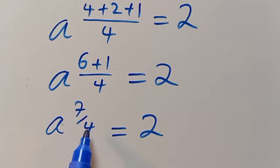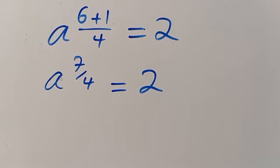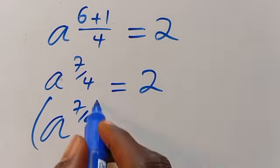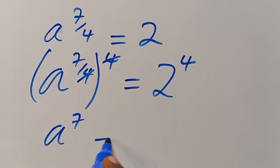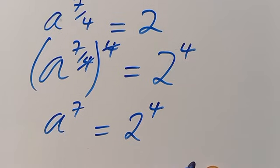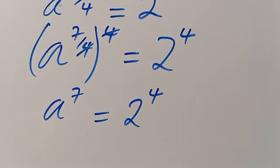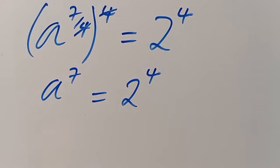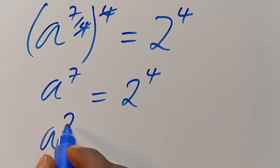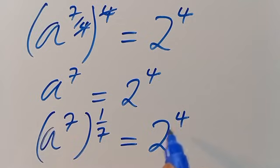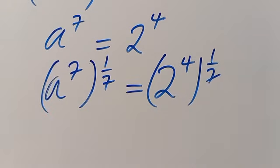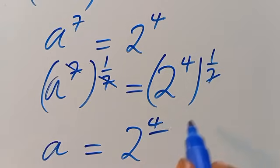Now, we want to eliminate the denominator 4, so let's take the power of both sides by 4: A to the power of 7 divided by 4, in parentheses, raised to the power of 4, equals 2 to the power of 4. We cancel this, so we have A to the power of 7 equals 2 to the power of 4. From here, to eliminate this 7, we take the reciprocal — the power of both sides by 1 divided by 7 — so A to the power of 7 times 1 divided by 7 cancels, giving A equals 2 to the power of 4 divided by 7.